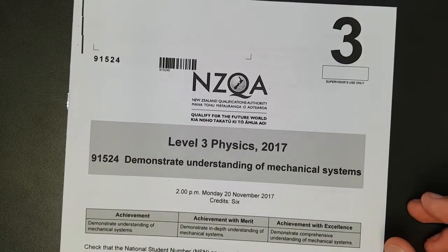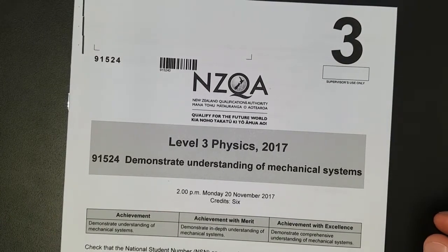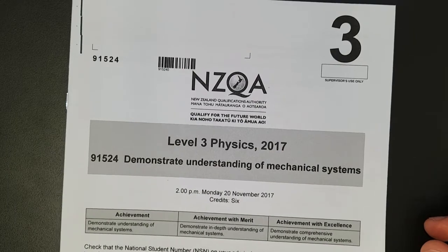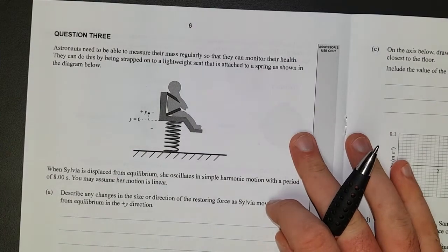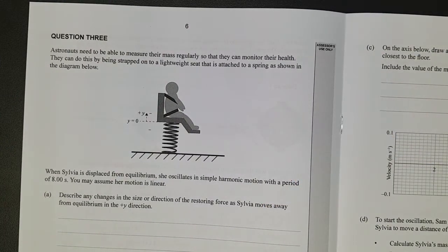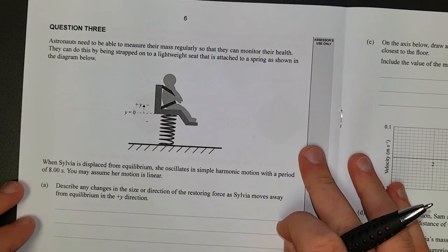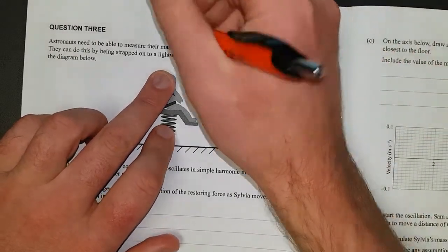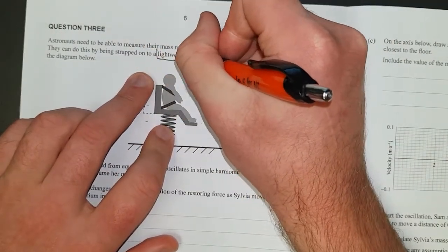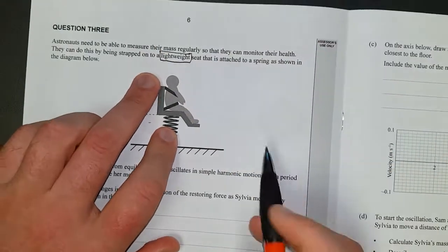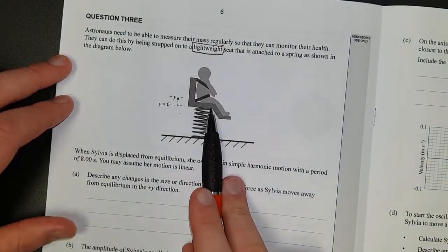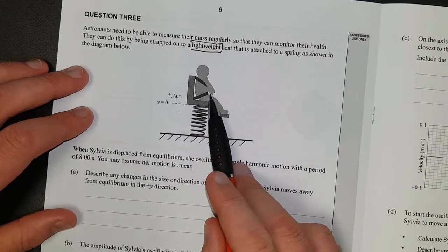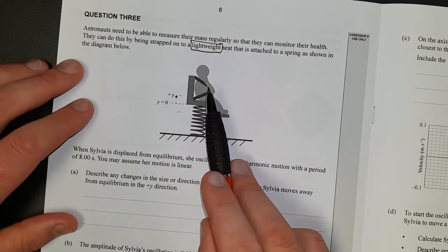So for this video I'll be working through question 3 of the 2017 Level 3 Mechanics exam. Question 3. Astronauts need to be able to measure their mass regularly so they can monitor their health. They can do this by being strapped to a lightweight seat that is attached to a spring shown in the diagram below. So there's my lightweight seat, we're just assuming it doesn't weigh anything. And there's my little person there.